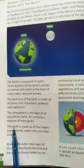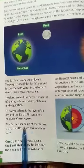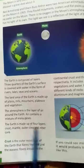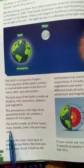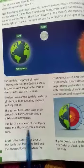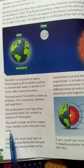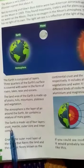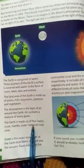My dear class, it's page number four. Let's start reading. Earth is made up of four layers: crust, mantle, outer core, and inner core. So these are the four layers of the Earth.